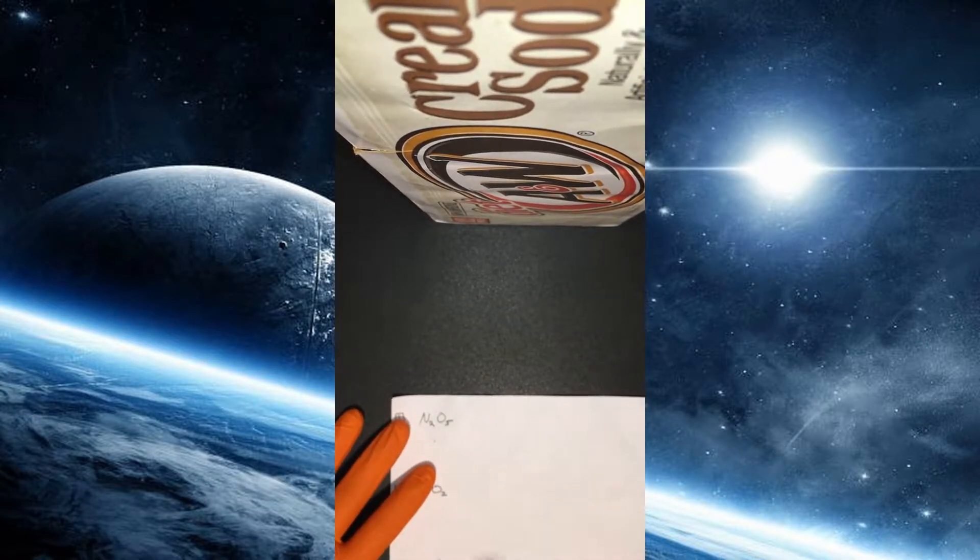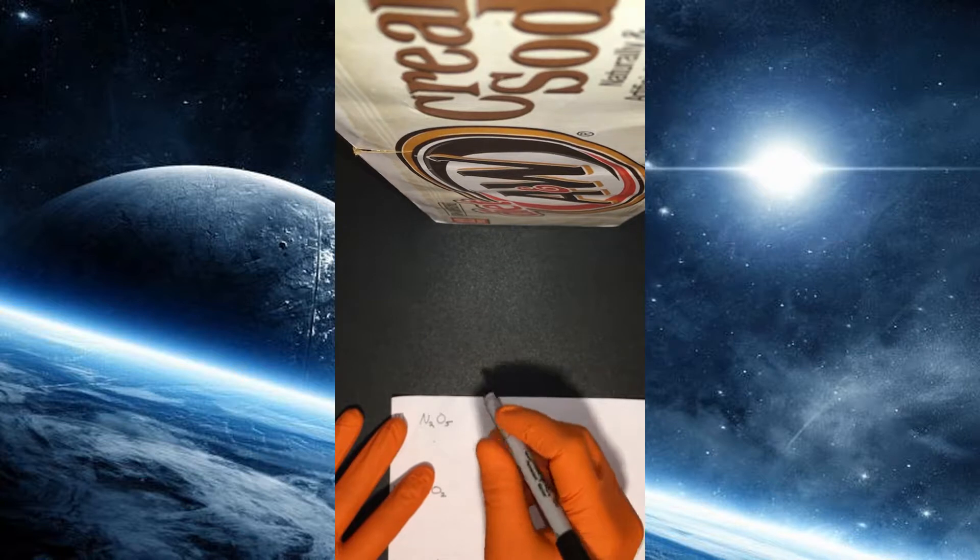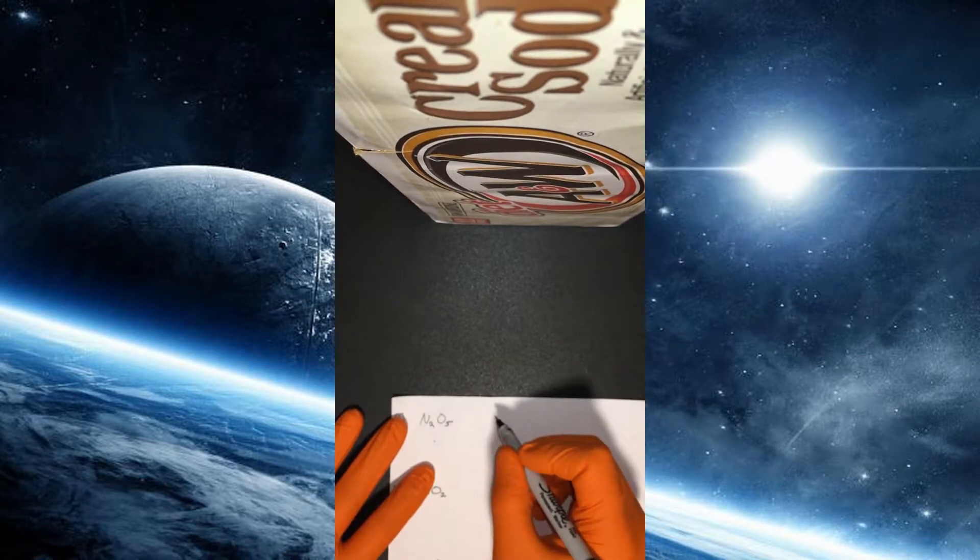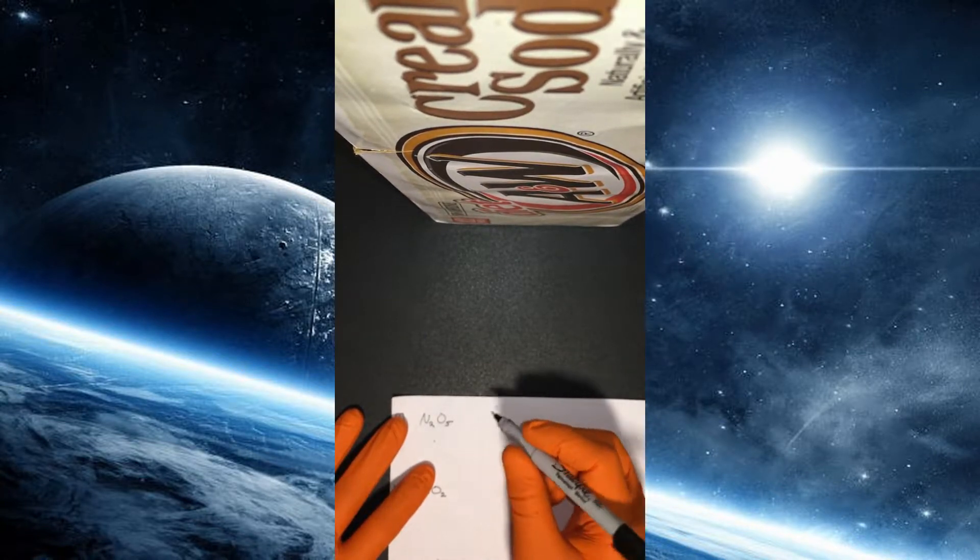So we have two nitrogens and five oxygens. So when we have that, remember we use the prefixes di, tri, tetra, penta, and so on and so forth.